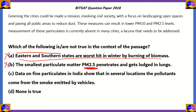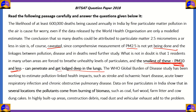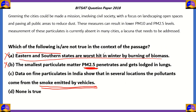We're left with C and D. Statement three says: 'data on fine particulates in India show that in several locations the pollutants come from smoke emitted by vehicles.' Going back to the passage, it says: 'data on fine particulates in India show that in several locations the pollutants come from burning of biomass such as coal, fuel wood, farm litter, cow dung cakes.' In highly built-up areas vehicular exhaust comes into the picture, but the primary statement says burning of biomass — not smoke emitted by vehicles. So statement three is incorrect as well. Since all three statements are incorrect, the correct answer is option D — none of these is true.